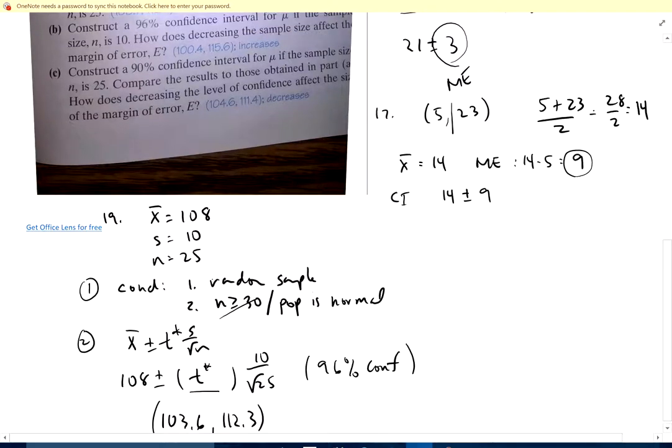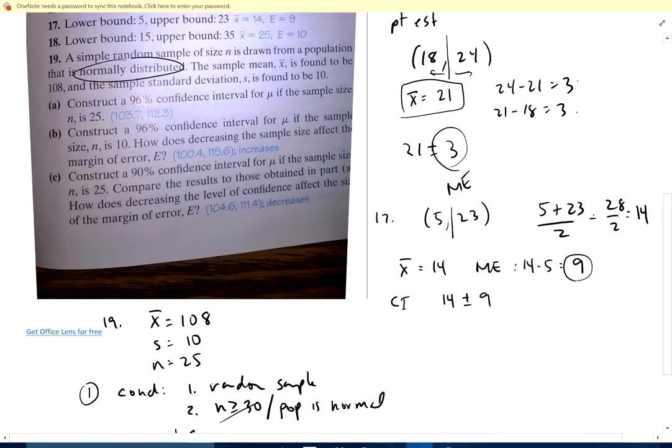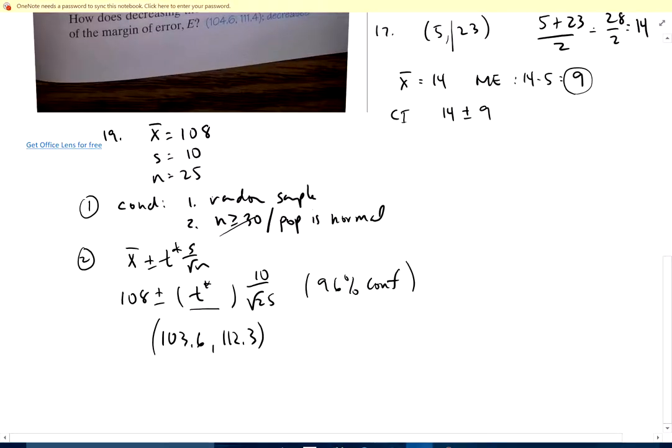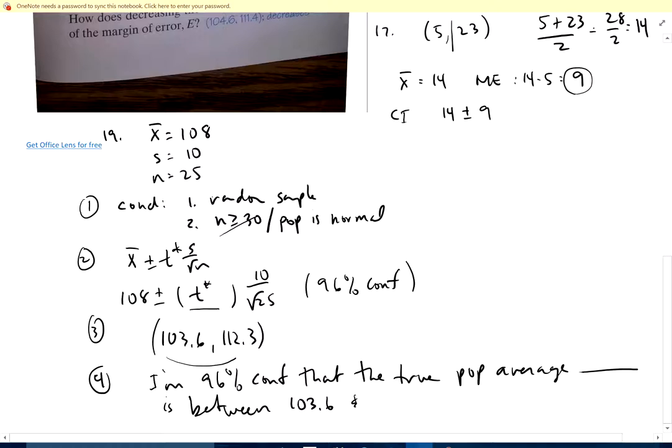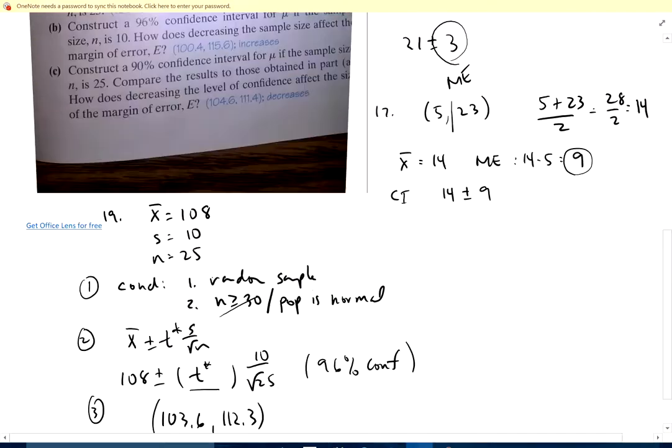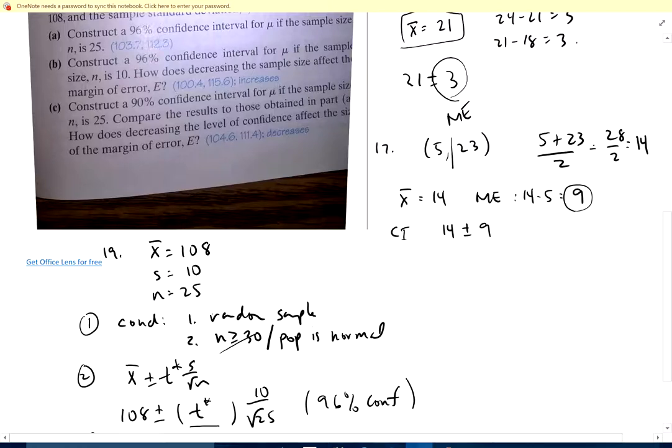There's my interval, and that's what it asks for. Do we have context in here? We don't have context. But I'm 96% confident that the true population average lies in that interval. So I'm going to go ahead and write that down. Here's the four things I'm looking for. I'm 96% confident that the true population average for whatever is between 103.6 and 112.3. Then B, that was all A.